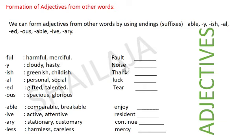So how can you form adjectives from other words? We can form adjectives from other words by using endings, also called suffixes. Add these endings to words to form adjectives: -able, -y, -ish, -al, -ed, -ous, -able, -ive, -ary. Let's see the examples.